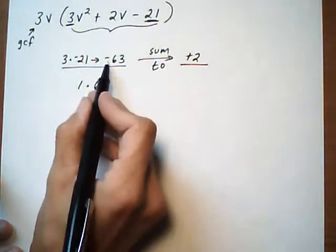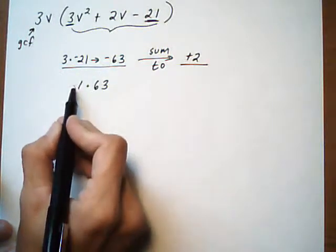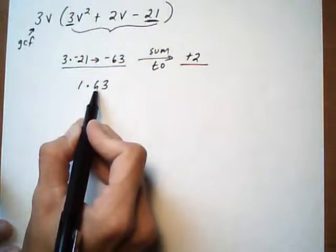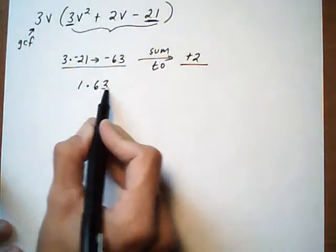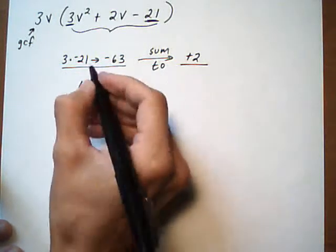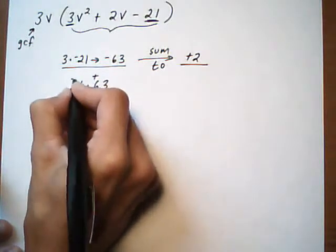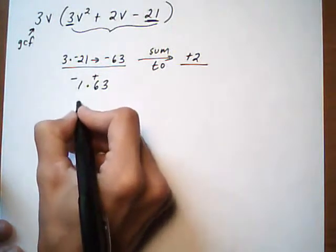63, and now it has to be a negative, which means these must be opposite signs. And if they're opposite signs plus minus, and they're adding to a positive, I need to give the positive to the larger number.